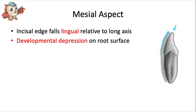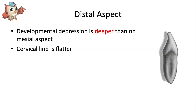The other important feature is this root concavity. This developmental depression is an important characteristic of mandibular incisors, and it appears on both the mesial surface and the distal surface. The distal root depression is usually deeper than it is on the mesial aspect. The CEJ or cervical line on the distal is slightly less curved than it was on the mesial.